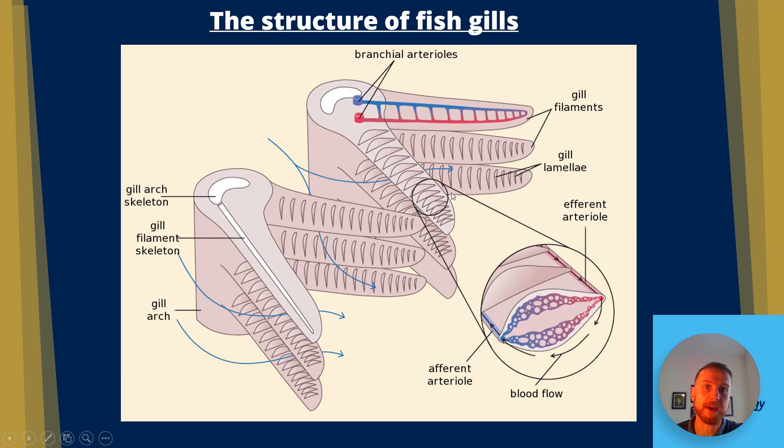Now these lamellae are going to further increase the surface area so the filaments are almost like the villi of the intestines and the gill lamellae are almost like the microvilli. With the gill lamellae we can see that they've got their own blood supply too and they're supplied by the afferent arteriole and the efferent arteriole will take it away.